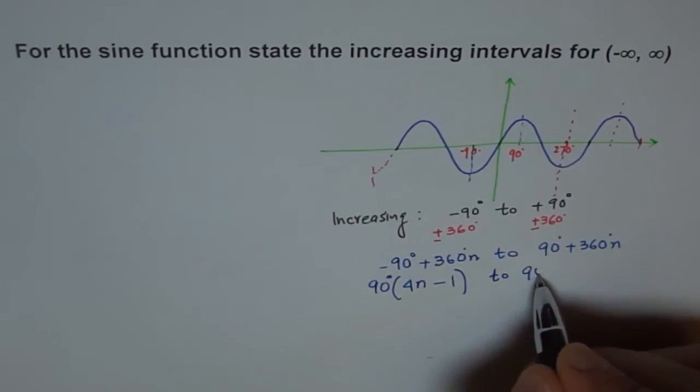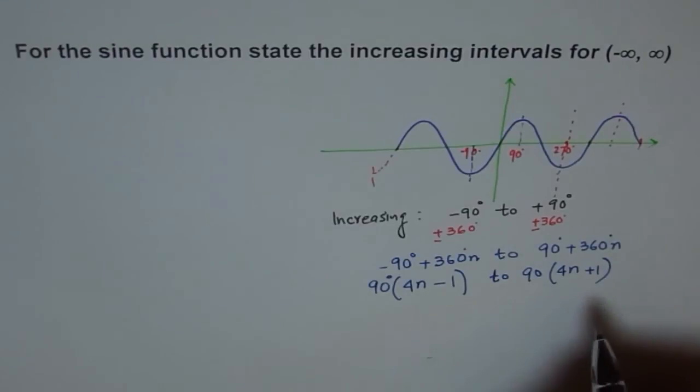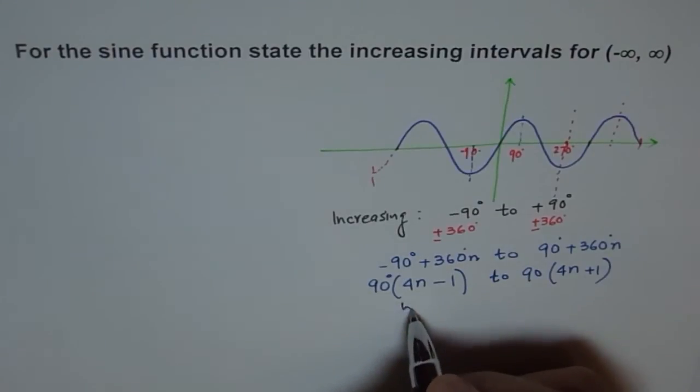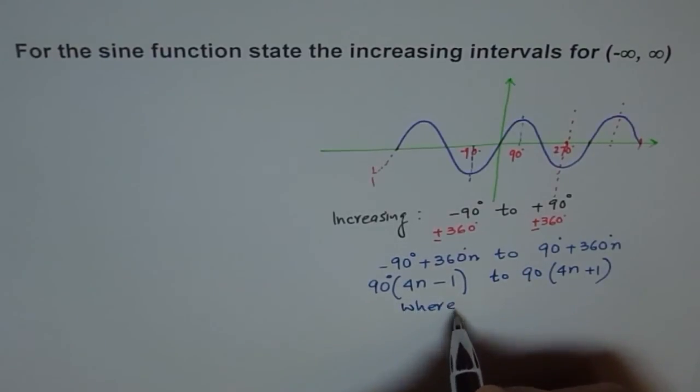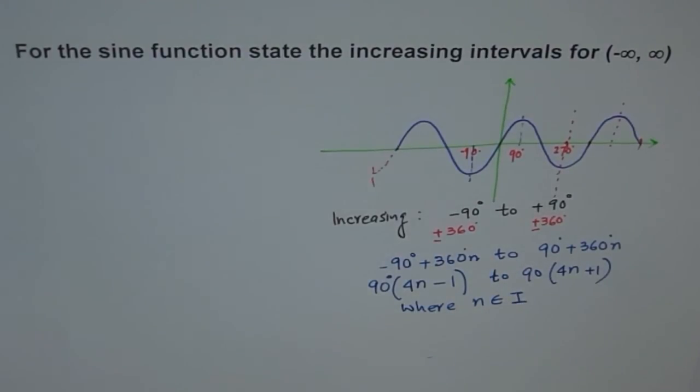Here also we can take 90 common. Let's factor out 90. So we get 4n plus 1. Now here what is n? Where n belongs to set of integers. That is what it is.